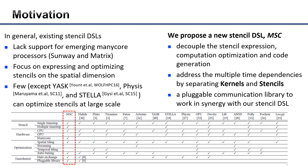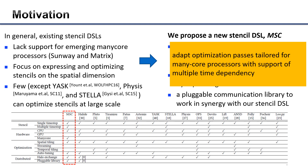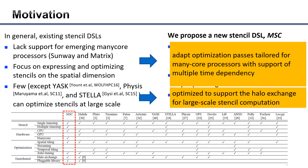To address the drawbacks of existing stencil DSLs, we propose a new DSL called MSC. It decouples stencil expression optimization and code generation, and addresses multiple time dependencies by separating kernels and stencils. M-cores can adopt optimization passes tailored for many-core processors with support of multiple time-step dependencies. We also design a pluggable communication library to work in synergy with our stencil DSL for large-scale stencil computation.